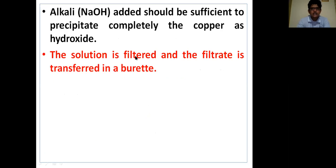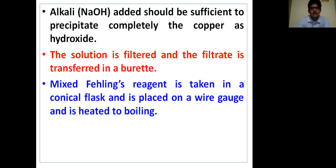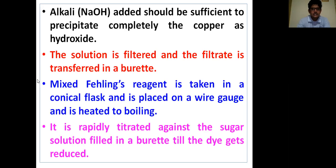The solution is filtered and the filtrate is transferred into a burette. The mixed Fehling reagent is taken in a conical flask and is placed on a wire gauze and is heated to boiling. It is rapidly titrated against the sugar solution filled in burette till the dye gets reduced.